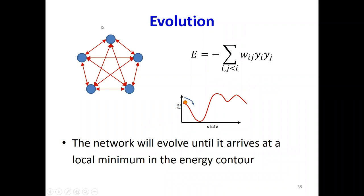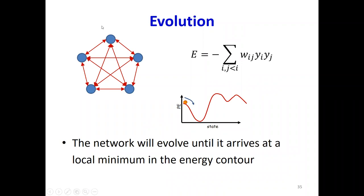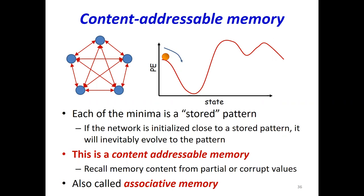What happens if I set this network in some configuration — meaning I set the values of each neuron to either plus one or minus one? The network is going to begin to evolve until it arrives at the local minimum in the energy contour. And these local minima are stable states which the network remembers. So this actually becomes something wonderful — a content addressable memory.